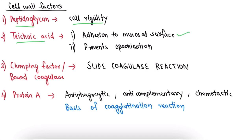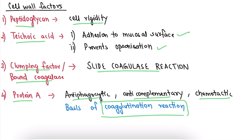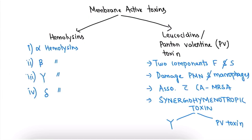The third cell wall factor is clumping factor, also called bound coagulase — this is responsible for the slide coagulase positive reaction. The fourth is Protein A, which is antiphagocytic, anti-complementary, and chemotactic. It is the basis of the coagglutination reaction.